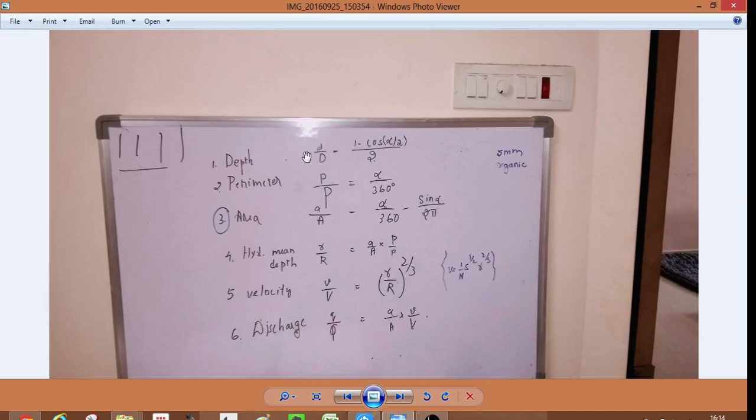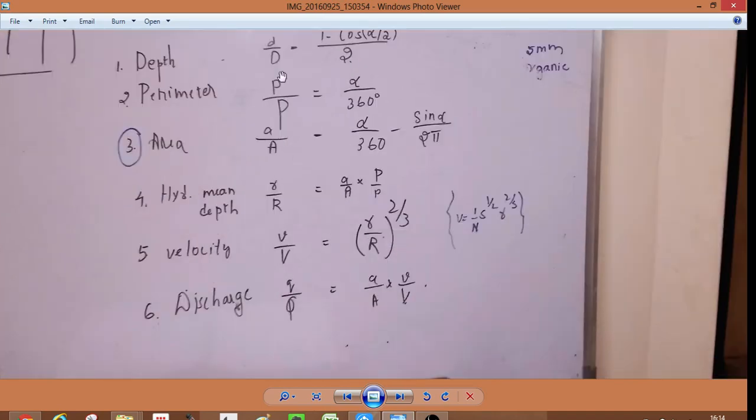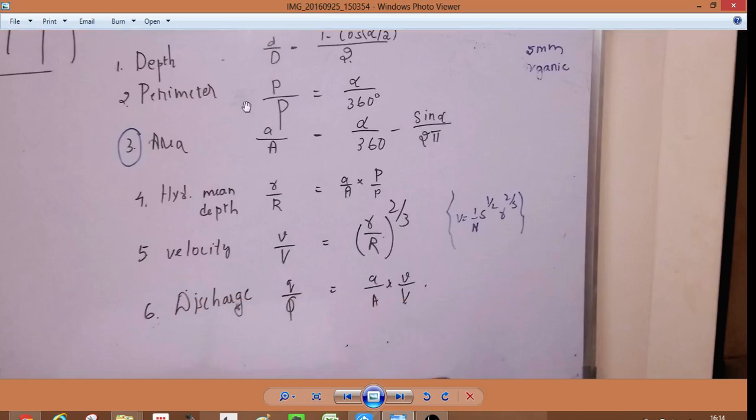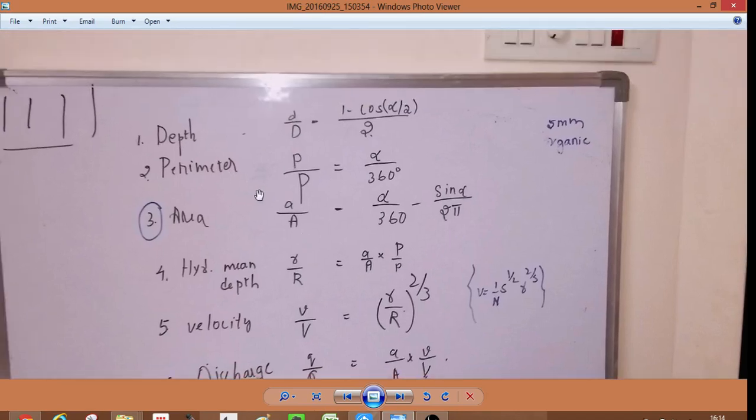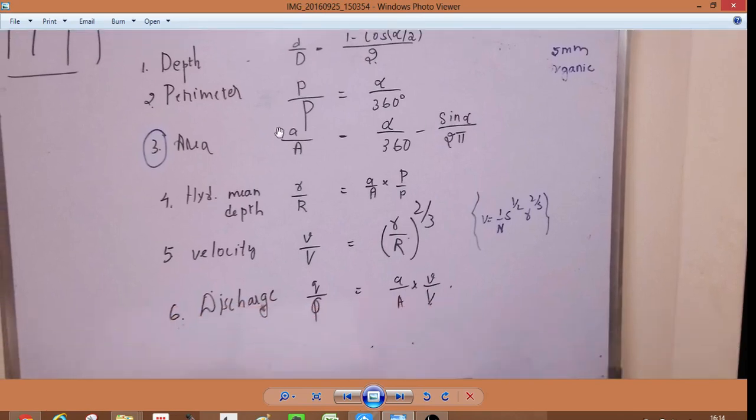d by D equals 1 minus cos(alpha/2) by 2. Parameter small p by capital P equals alpha by 360. Area small a by capital A is alpha by 360 minus sin(alpha) by 2π.